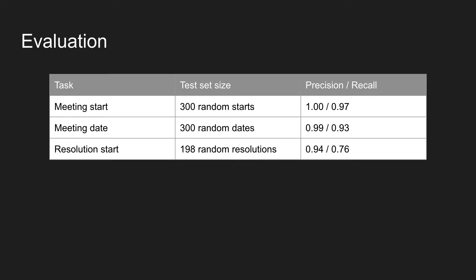We also evaluated each of these steps. For meeting starts we took 300 random starts and looked at the results — 100% precision: it's always a start of a meeting, but it doesn't find all starts. For identifying the correct date of the start of a meeting, there were only 3 mistakes out of 300. For finding the start of a resolution, we took 198 random resolutions — our phrase list and fuzzy search together give high precision but relatively low recall, because our phrase model is incomplete. We deal with this by expanding our model and creating a new evaluation set to avoid overfitting on the initial one.